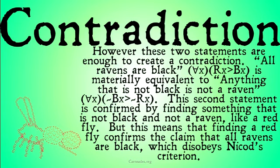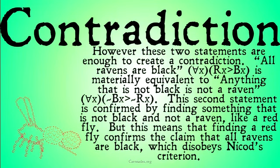Here's the problem. These two statements are enough to create a contradiction. 'All ravens are black' — which we can represent as: for all x, if x is a raven, then x is black — is materially equivalent to 'anything that is not black is not a raven.' That's just basic transposition. This second statement is confirmed by finding something that is not black and not a raven. Based on Nicod's criterion, if I find something that's not black and not a raven, I've confirmed my second statement. But then I've confirmed any materially equivalent statement — so I've confirmed the first statement as well. That means that finding a red fly confirms the claim that all ravens are black, which seems very counterintuitive and disobeys Nicod's criterion.